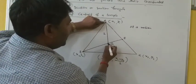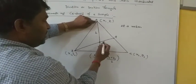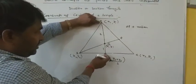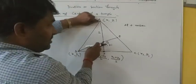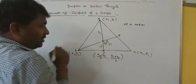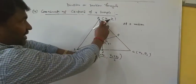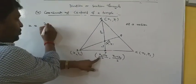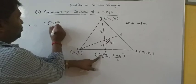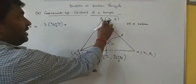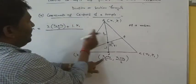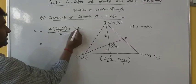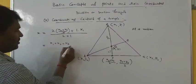We have to calculate the coordinate of centroid G, which is the point of intersection of medians. Point G is internally dividing AP in the ratio 2:1. So applying the internal section formula, the x-coordinate can be written as: 2 multiplied by (x2 + x3)/2 plus 1 multiplied by x1, divided by 2 plus 1. This simplifies to (x1 + x2 + x3) by 3.